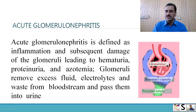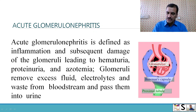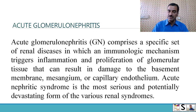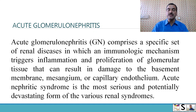Normally, the glomerulus passes waste material and excess water in the form of urine, but due to some damage to the glomeruli, excessive protein and blood pass into the urine. Acute glomerulonephritis comprises a specific set of renal diseases in which an immunologic mechanism triggers inflammation and proliferation of glomerular tissue, resulting in damage to the basement membrane, mesangium, or the capillary endothelium.